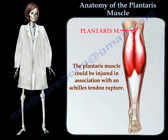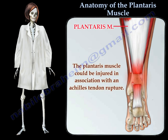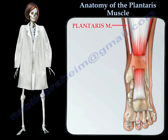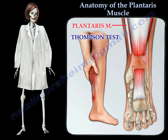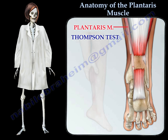The plantaris muscle could be injured in association with an Achilles tendon rupture. Occasionally, when performing a Thompson test to check for an Achilles tendon rupture, it may show an inaccurate result if the plantaris is intact.